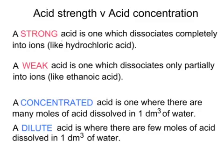A strong acid is one which dissociates completely into ions, whereas a weak acid is one that dissociates only partially into ions. This is very different from the words concentrated and dilute. A concentrated acid has lots of moles of acid dissolved in one cubic decimetre of water, whereas a dilute acid has very few moles dissolved in one cubic decimetre of water. Don't confuse the two things.